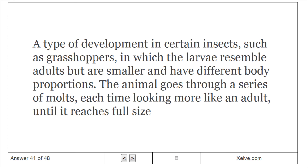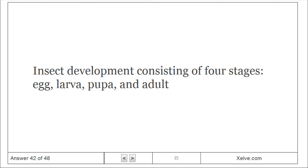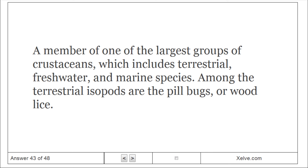Incomplete metamorphosis. A type of development in certain insects, such as grasshoppers, in which the larvae resemble adults but are smaller and have different body proportions; the animal goes through a series of molts, each time looking more like an adult, until it reaches full size. Complete metamorphosis. Insect development consisting of four stages: egg, larvae, pupae, and adult. Isopods. A member of one of the largest groups of crustaceans, which includes terrestrial, freshwater, and marine species; among the terrestrial isopods are the pillbugs, or wood lice.